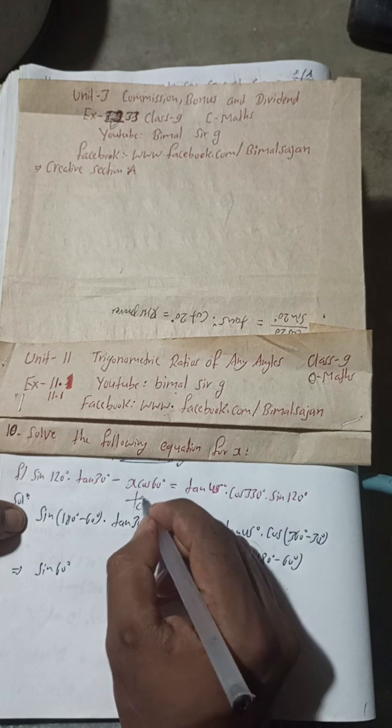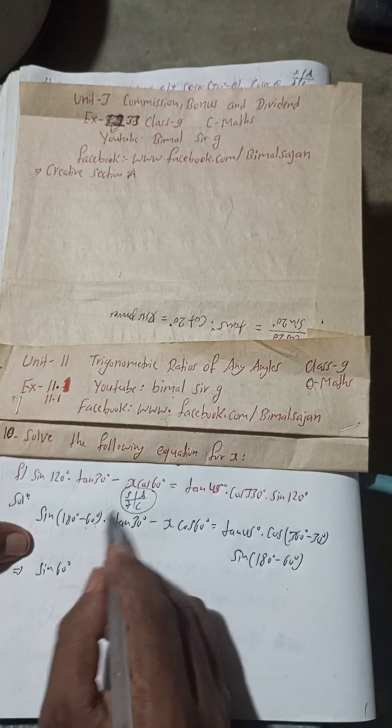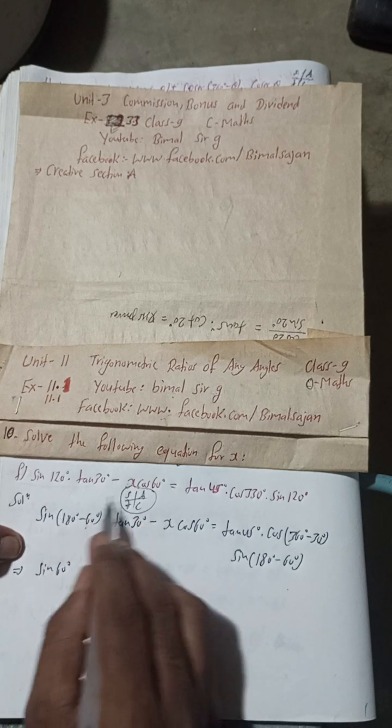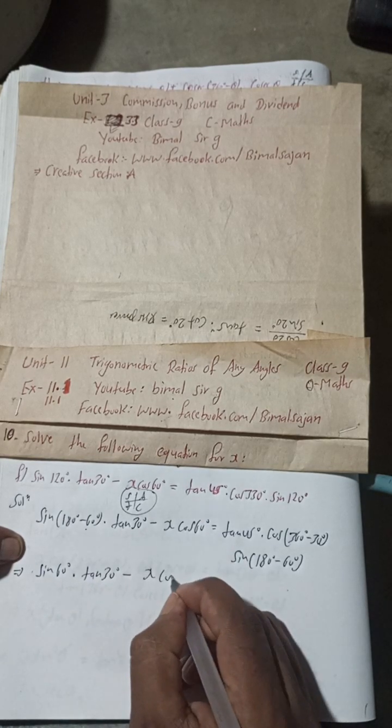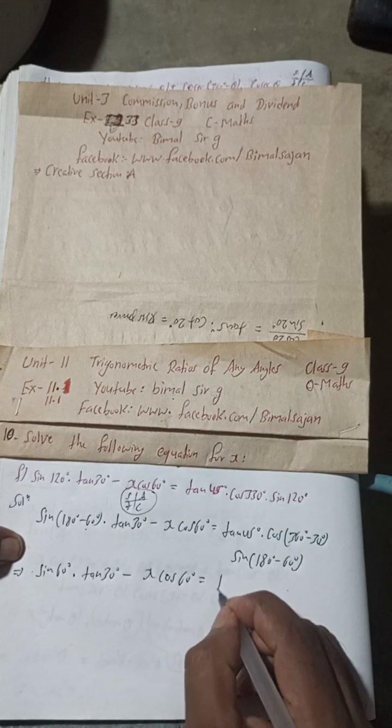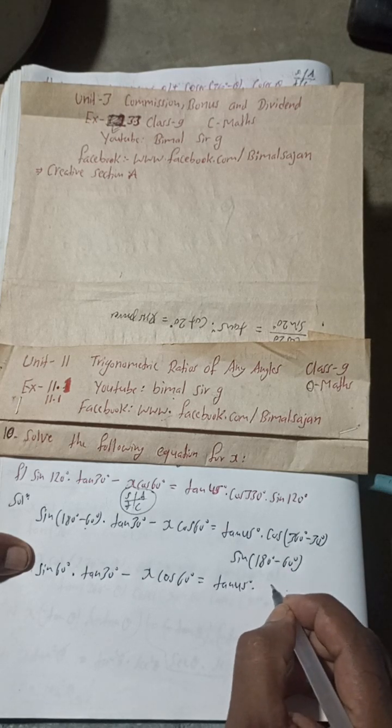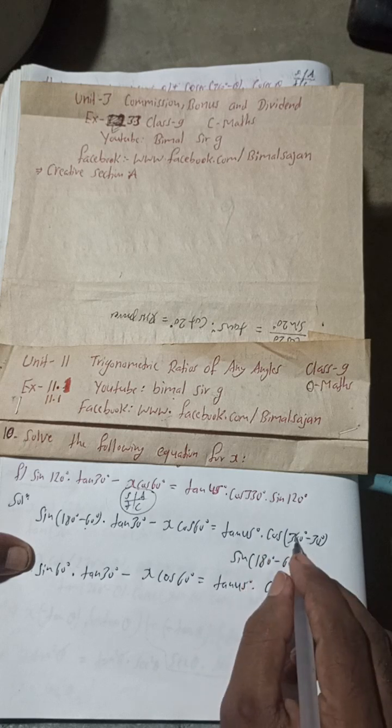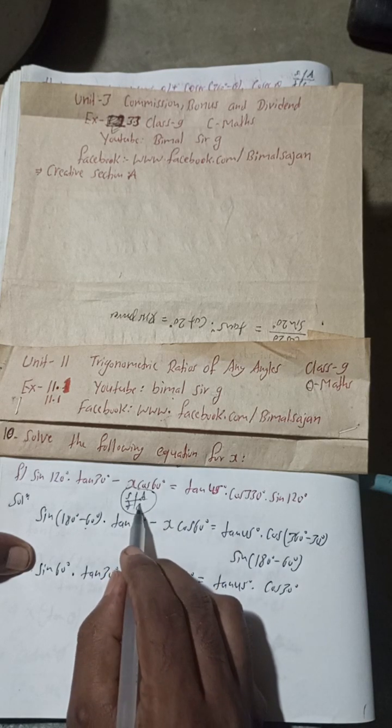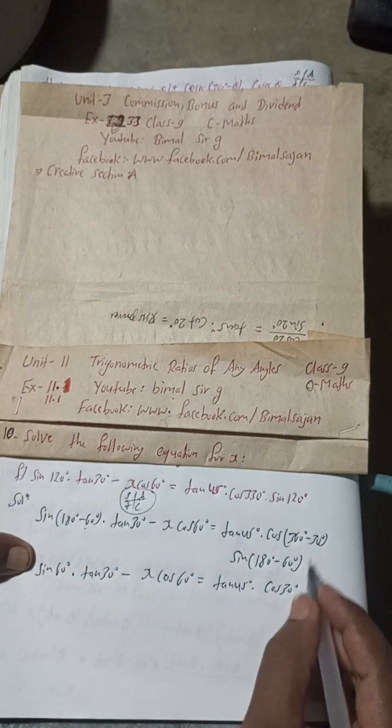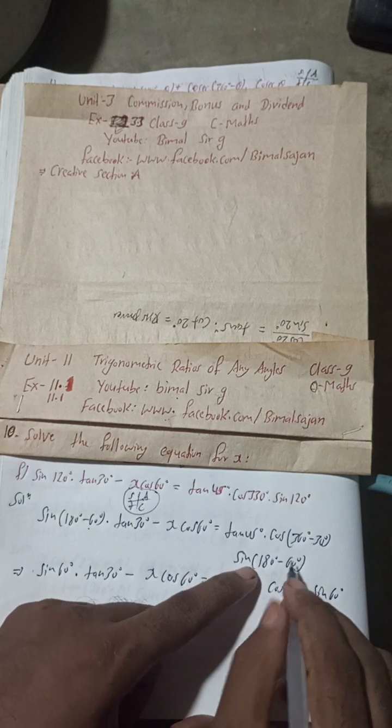So I'm going to write CAST. This is the CAST rule. CAST rule tells that 180 minus theta lies in the second quadrant. In second quadrant, sine is positive, sine and cosec. So this is plus only. Into tan 30 degree minus x cos 60 degree equals tan 45 degree into cos 330. Cos 360 means this will be cos 30 degree. CAST rule tells that this is in the fourth quadrant, and in fourth quadrant cos and sec is positive, so this is plus only.